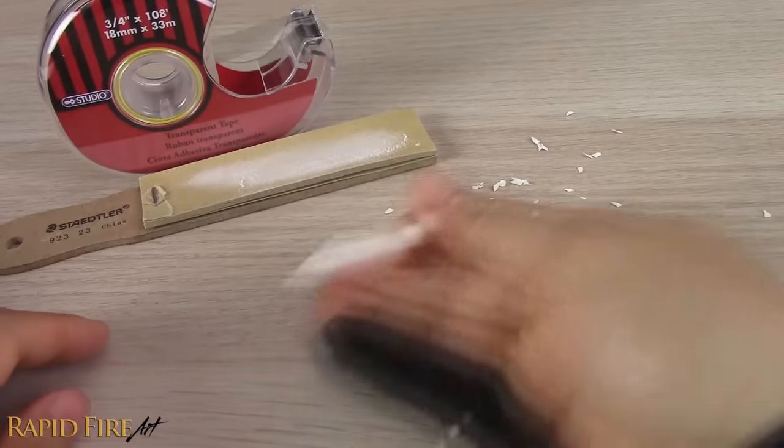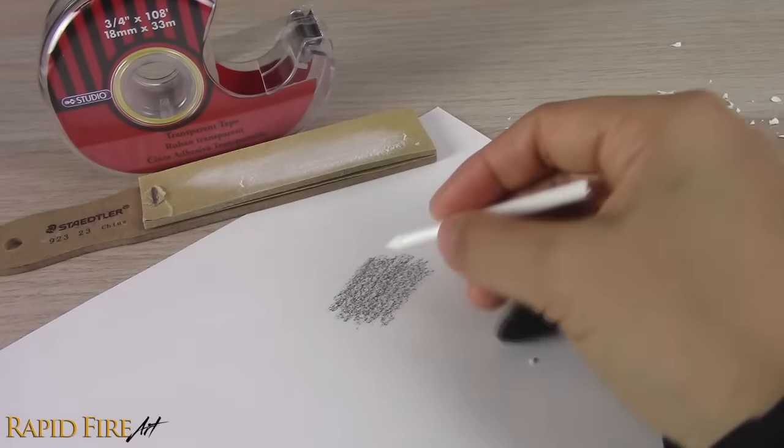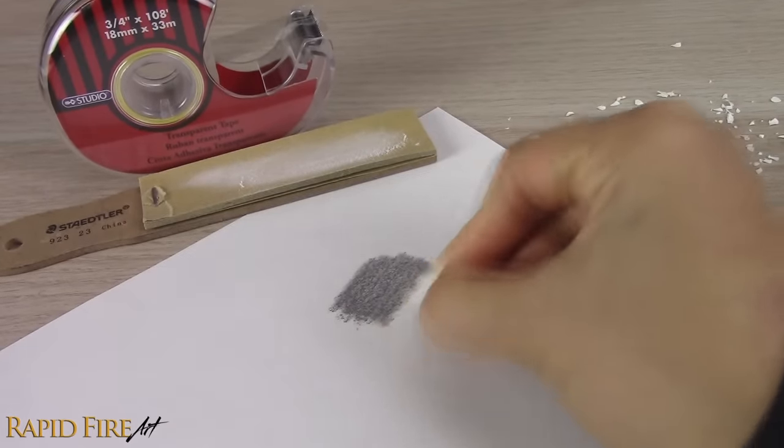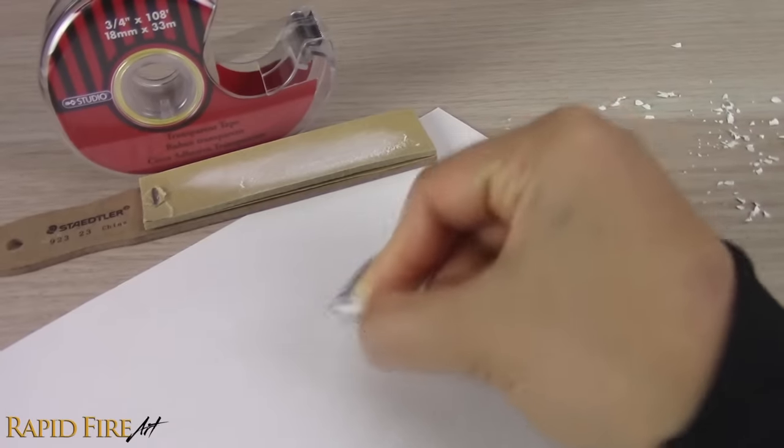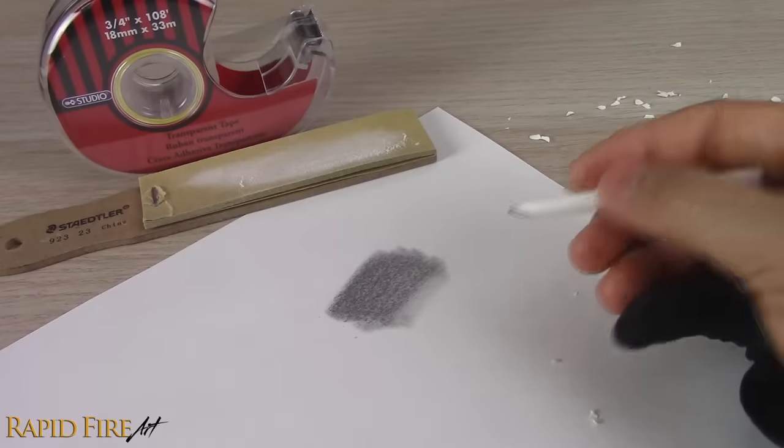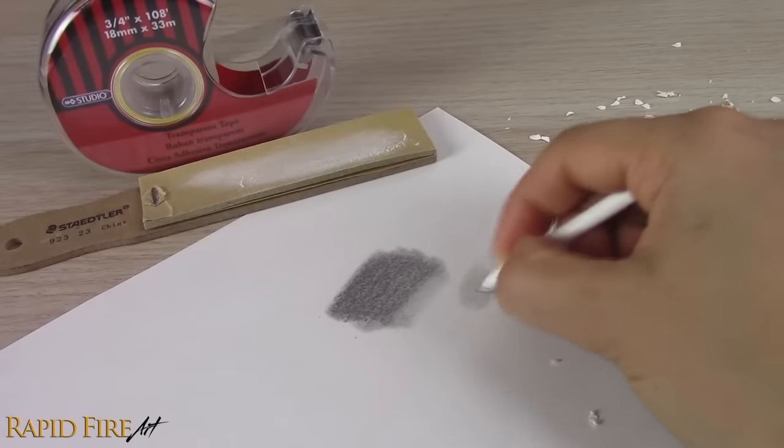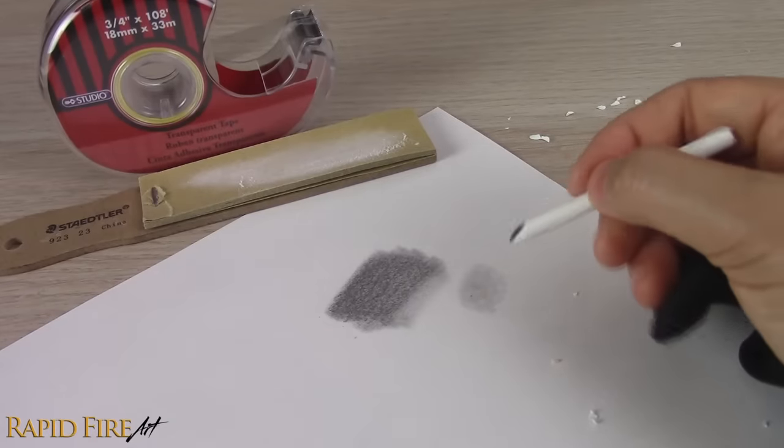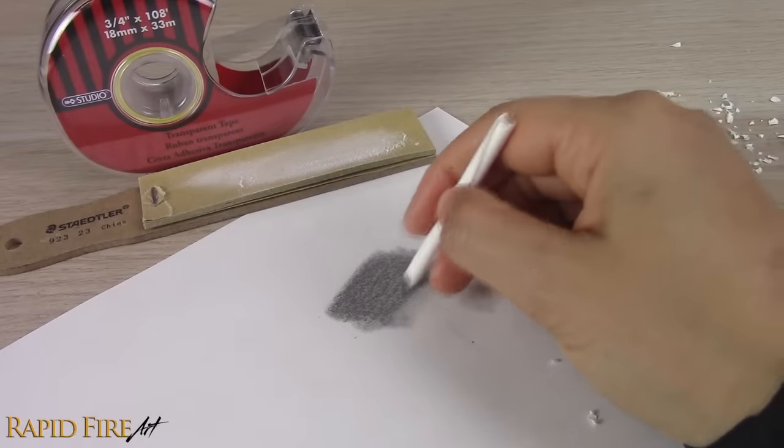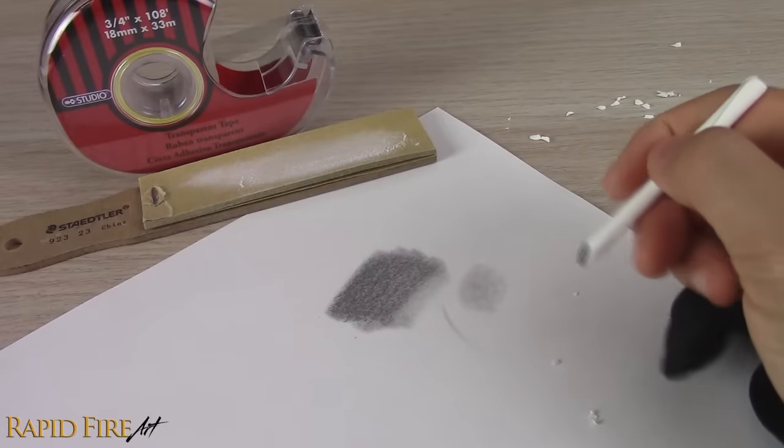Now it's time for a test. Let's see how well it'll blend. Let's see how well it draws, using the side and tip. The graphite seems to spread very well, and the tip looks as though it can blend and draw small details. This one's definitely a winner.